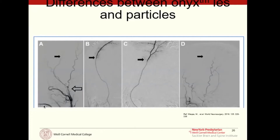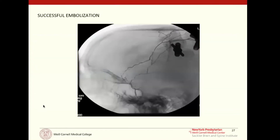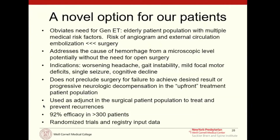With Onyx, we take our micro catheters very far out distally. As you can see here in images B and C, our micro catheter is essentially all the way up by the top of the cranium, right up against where the subdural membrane is. This way we're very far away from any skull-based collateral vessels and potential feeders. This is what our Onyx casts look like after embolization.